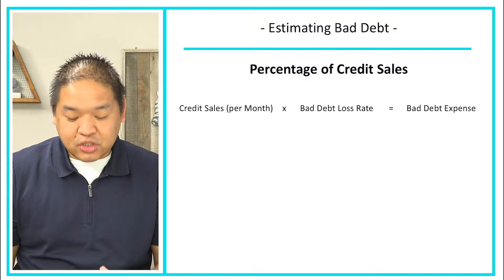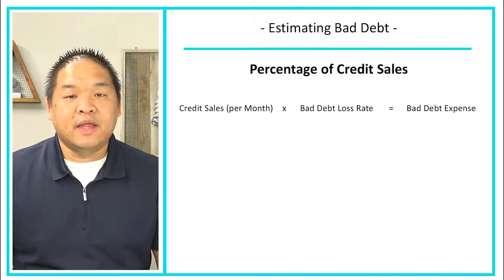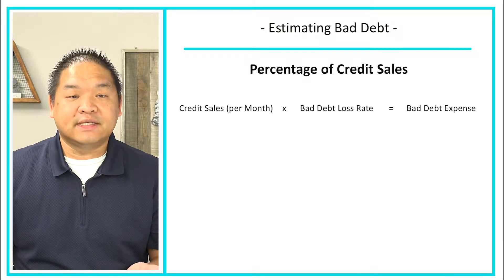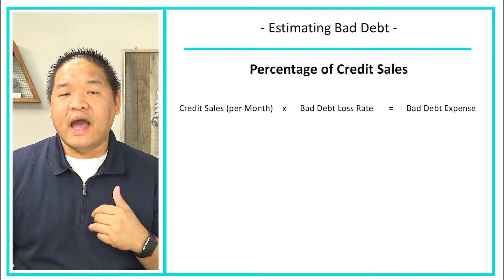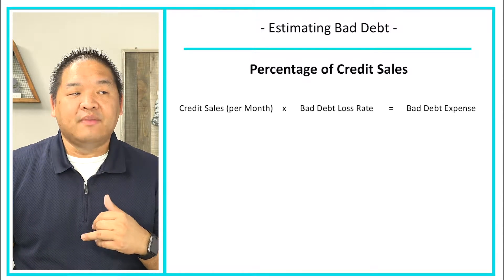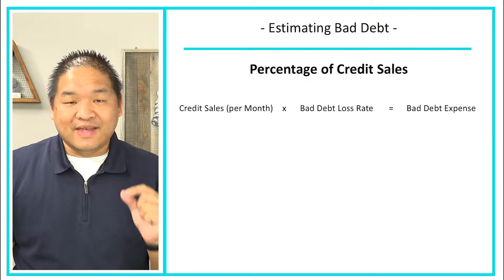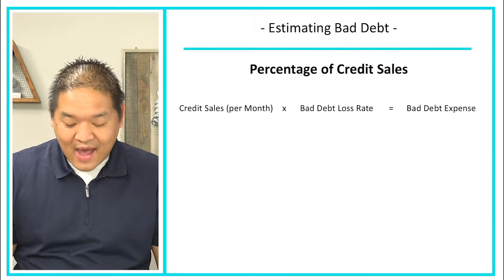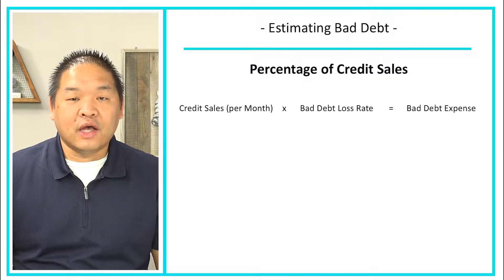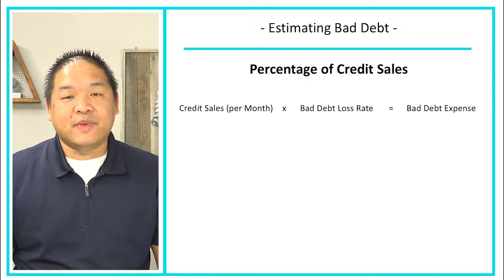In formula terms, we take net credit sales for the month — so after all refunds and any early payments — and multiply it by the bad debt loss rate to get bad debt expense. The bad debt loss rate is something you'll need to calculate separately.